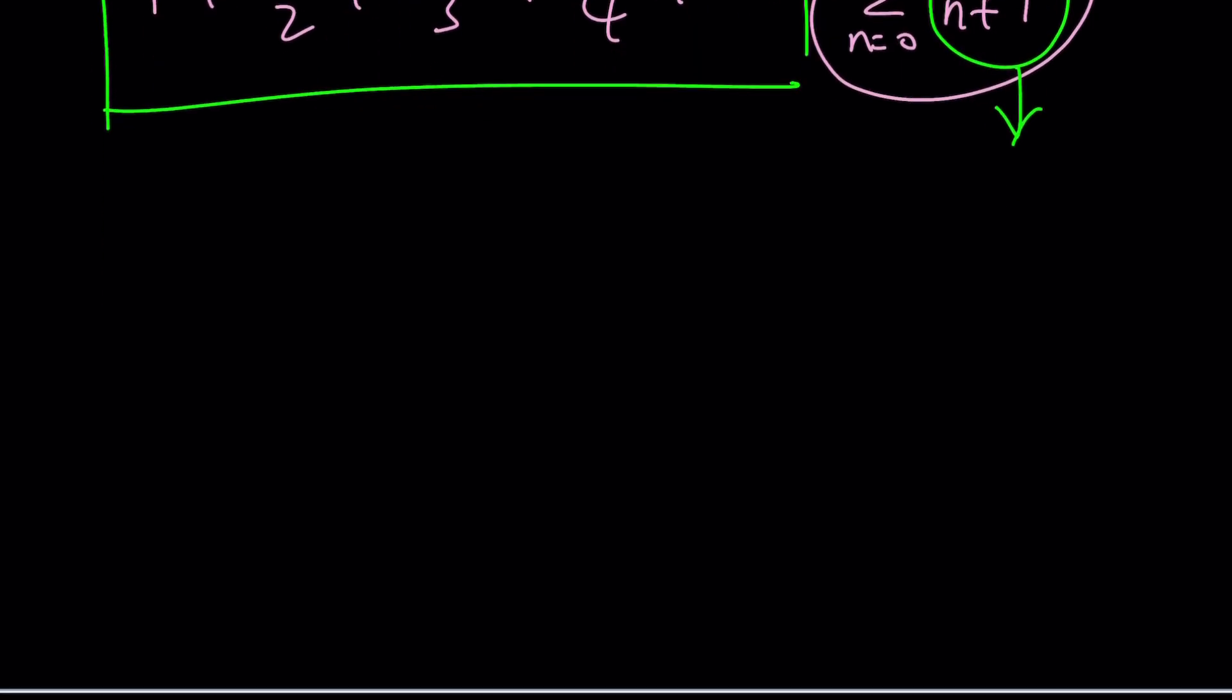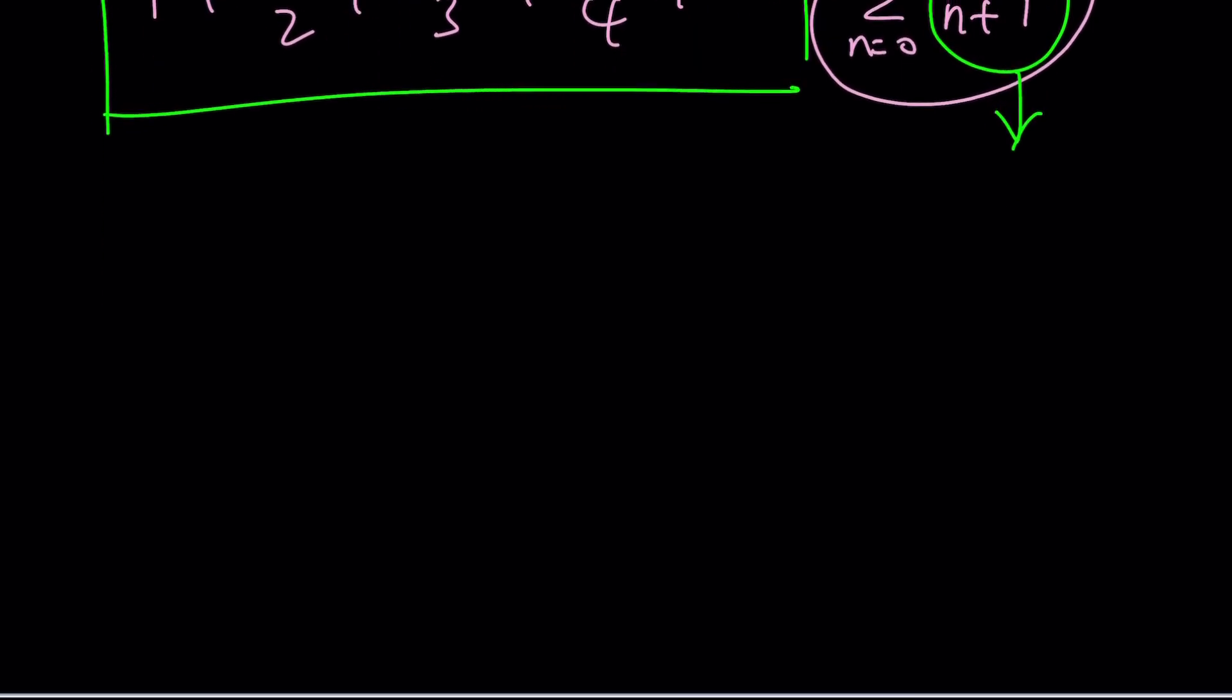I'm going to start with the well-known infinite geometric series. What is that? It is one plus x plus x squared plus x cubed plus x to the fourth, and so on. And that is equal to one over one minus x.